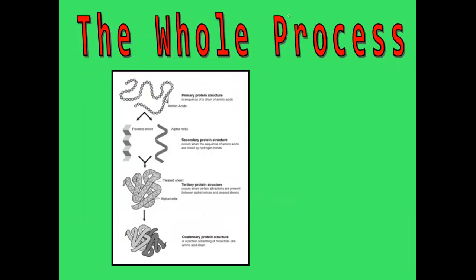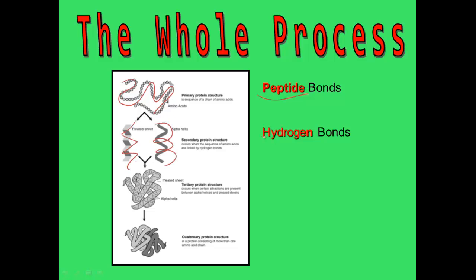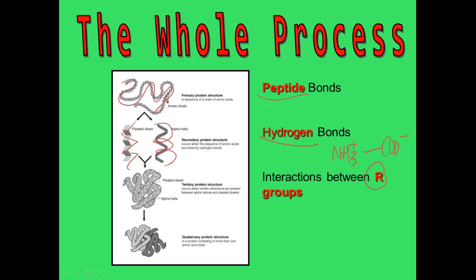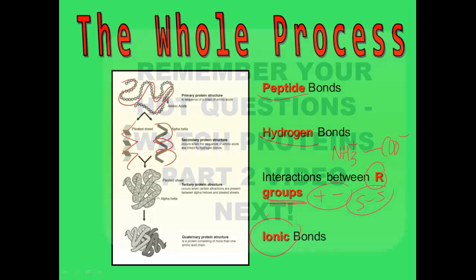Looking at the whole process from primary to quaternary: primary structure is amino acids joined with peptide bonds; secondary structure involves twisting into an alpha helix or beta pleated sheet due to hydrogen bonds between NH and COO groups; tertiary structure comes from positive-negative and sulfur-sulfur R group interactions; and finally, some of these three-dimensional proteins bind together ionically in quaternary structure for the protein to do its job.